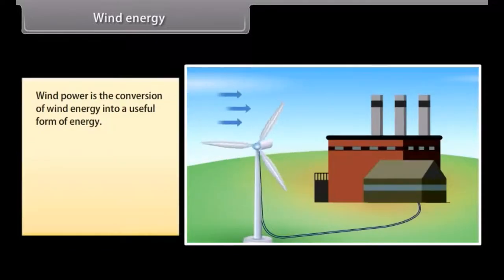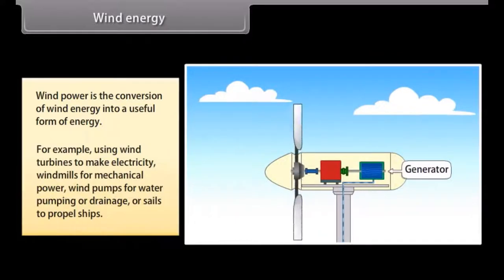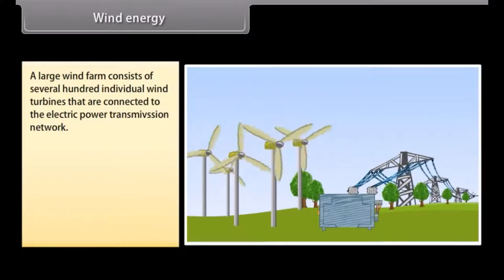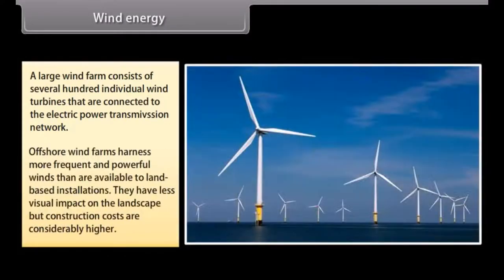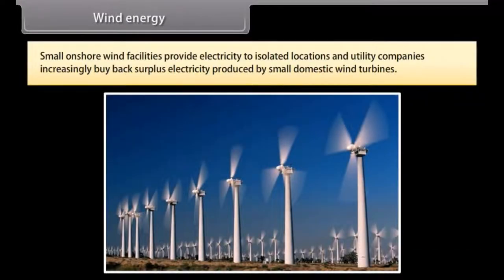Wind energy. Wind power is the conversion of wind energy into a useful form of energy using wind turbines to make electricity, windmills for mechanical power, wind pumps for water pumping or drainage, or sails to propel ships. A large wind farm consists of several hundred individual wind turbines that are connected to the electric power transmission network. Offshore wind farms harness more frequent and powerful winds than are available to land-based installations. Small onshore wind facilities provide electricity to isolated locations, and utility companies increasingly buy back surplus electricity produced by small domestic wind turbines.